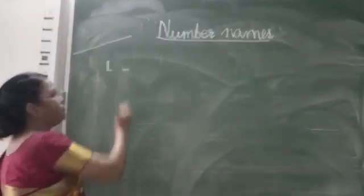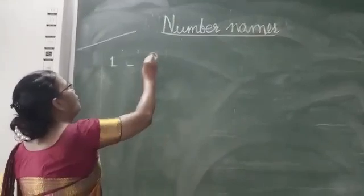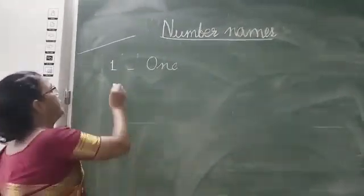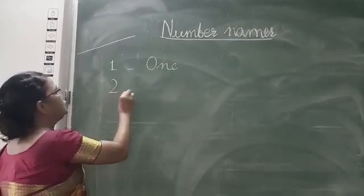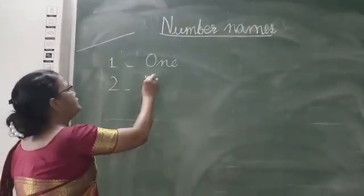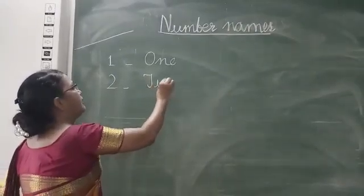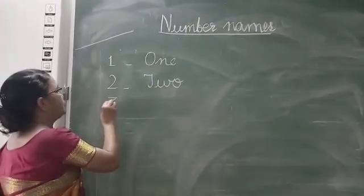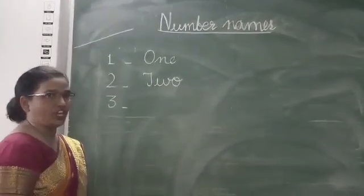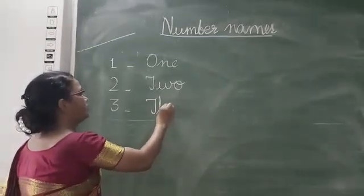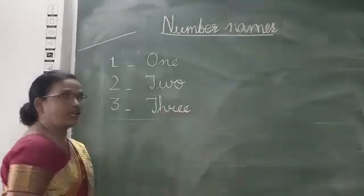Spelling of 1 is O-N-E. Next 2. Spelling is T-W-O. Next 3. Spelling of 3 is T-H-R-E-E.